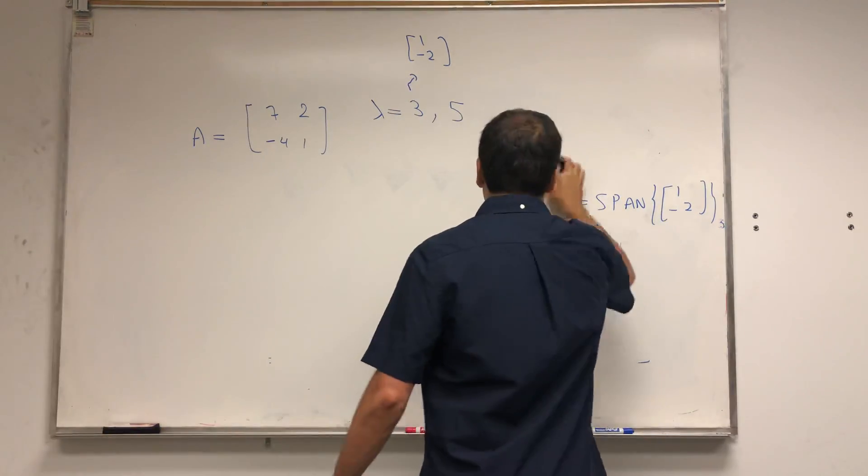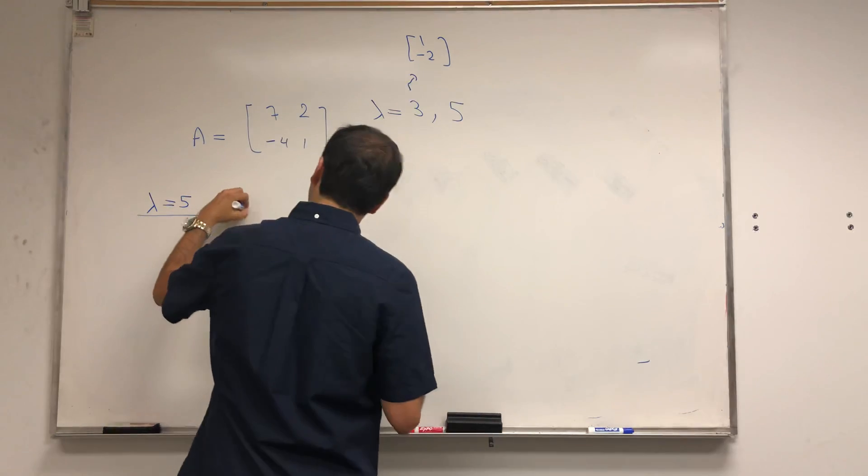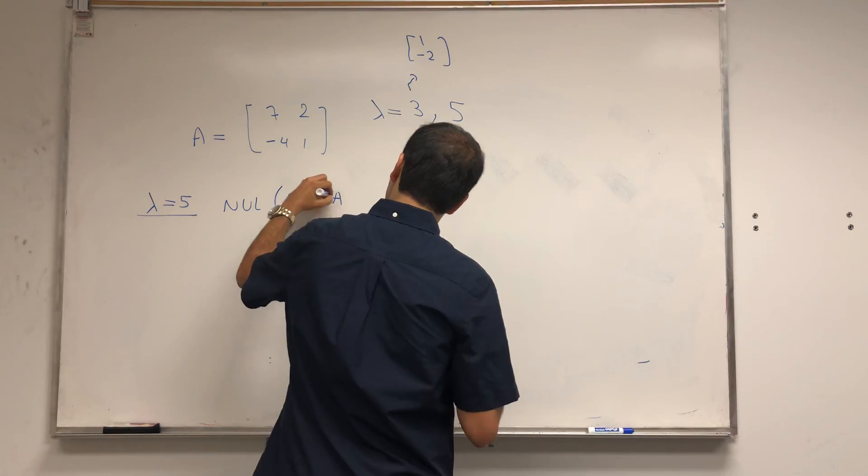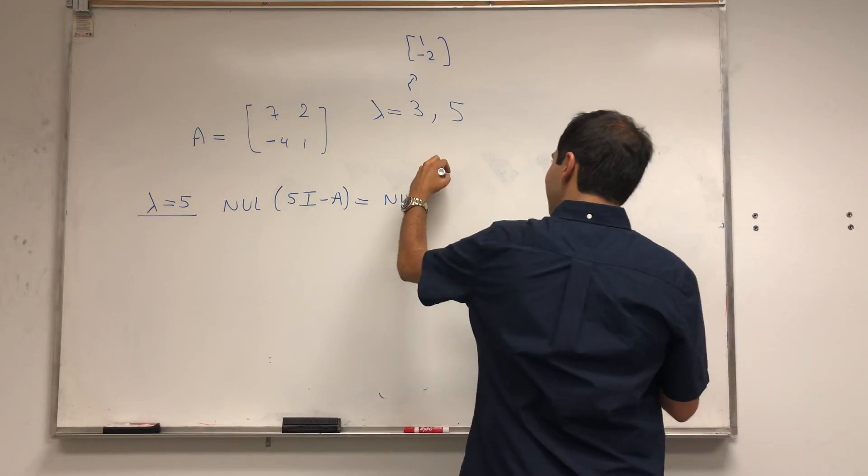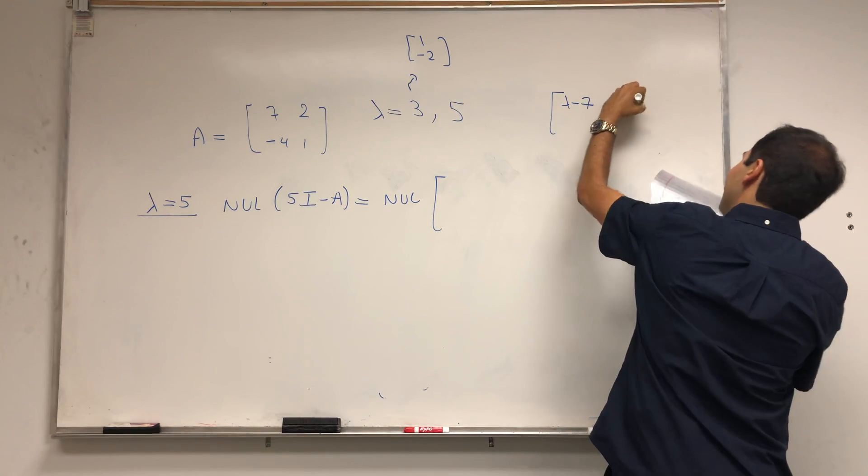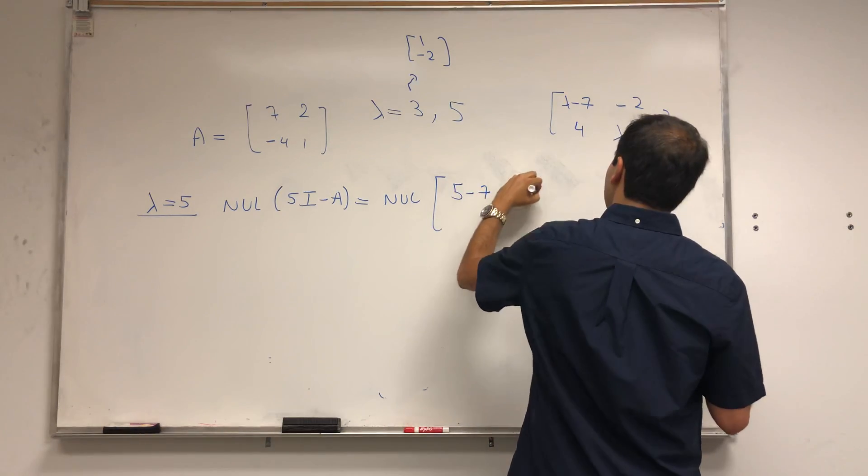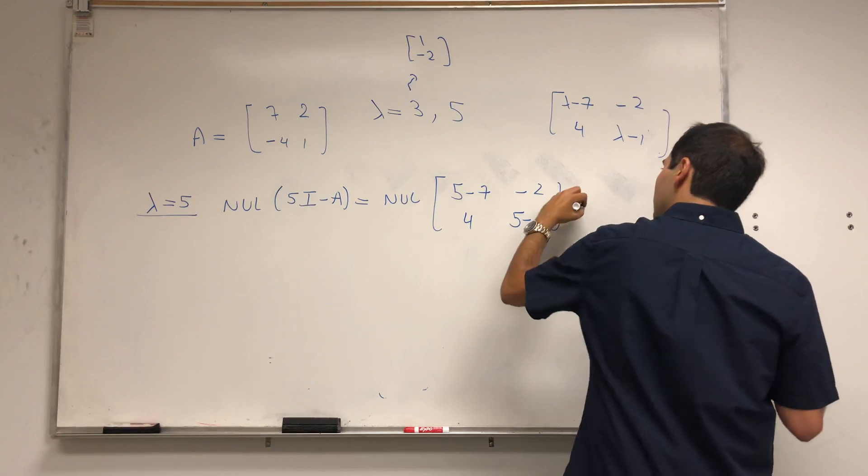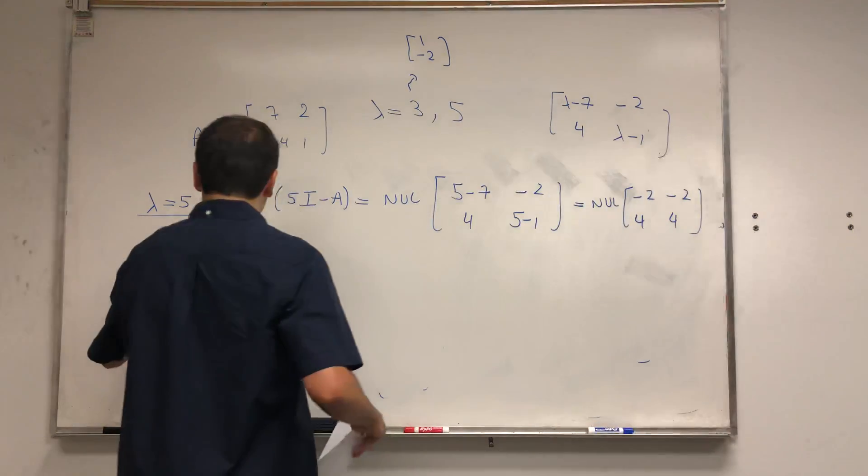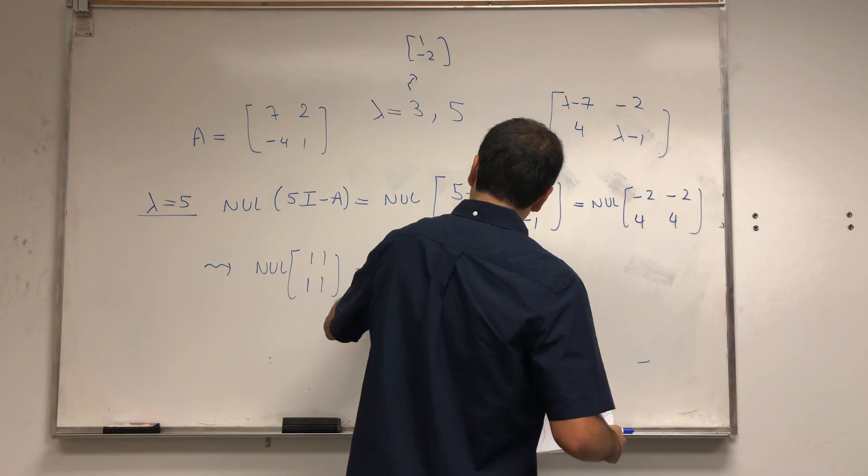Let's just do the same spiel, but with lambda equals 5. The null space of 5 I minus A - well, you just plug in lambda equals 5. Remember, lambda I minus A was lambda minus 7, minus 2, 4, lambda minus 1. Plug in lambda equals 5: you get 5 minus 7, minus 2, 4, 5 minus 1. That's the null space of minus 2, minus 2, 4, 4. How nice, you can simplify this. So that's the null space of 1, 1, minus 2, minus 2. And that's the null space of 1, 1, 0, 0.